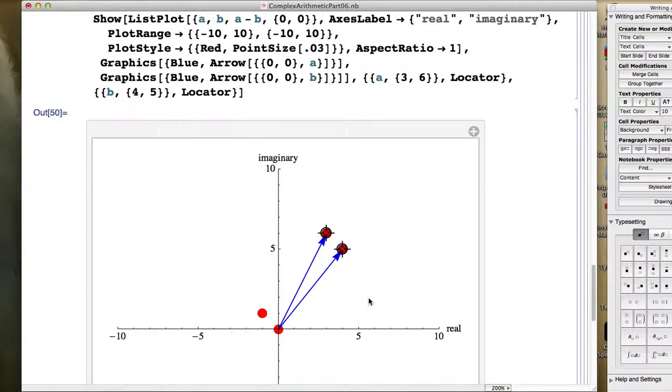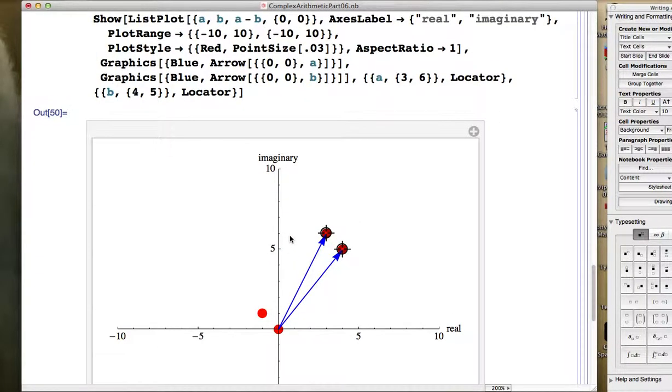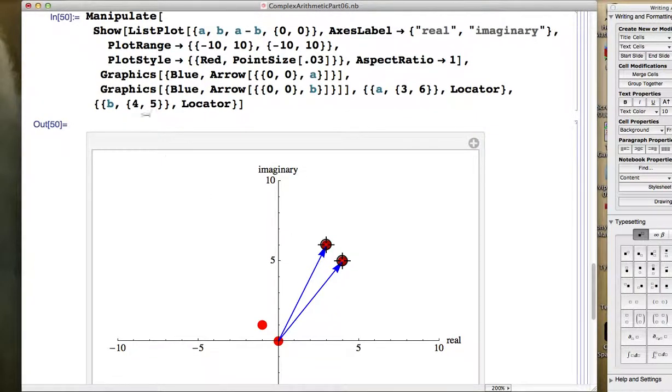I'm also going to get rid of any arrows that end at a plus b. Okay, so I've got the visualization here. I got rid of the dot that was up here and the arrows that went up there. You see I have a new dot at a minus b.